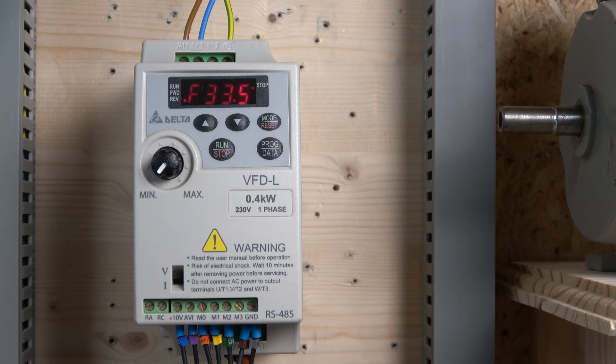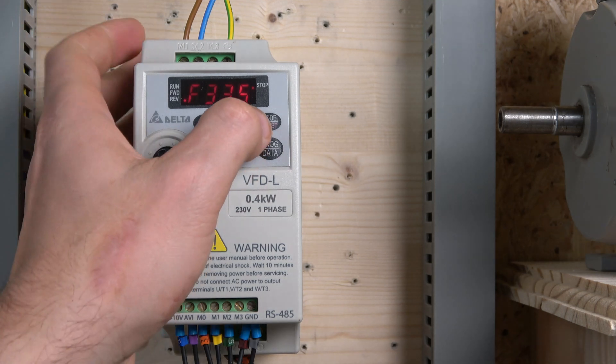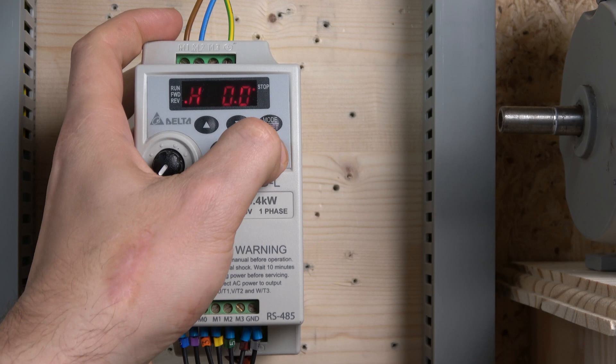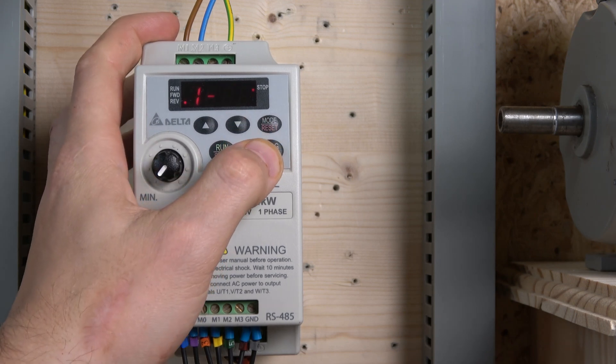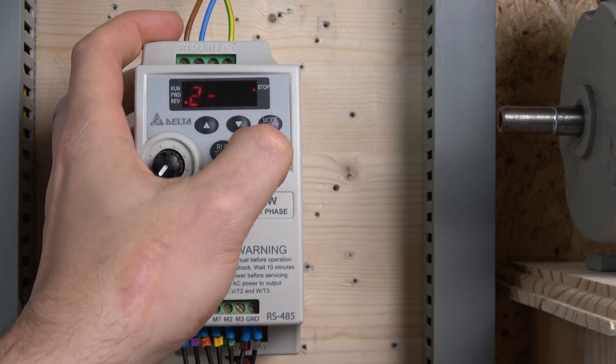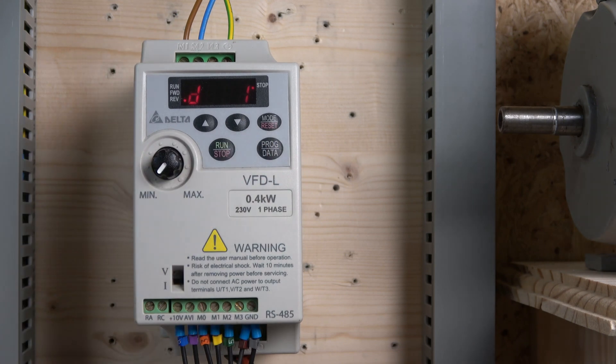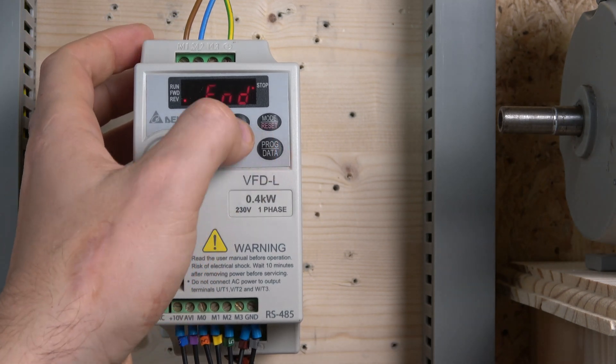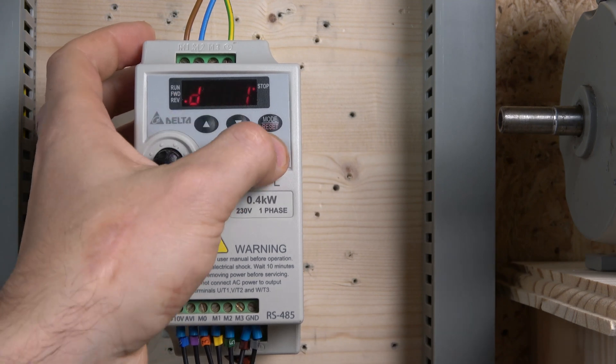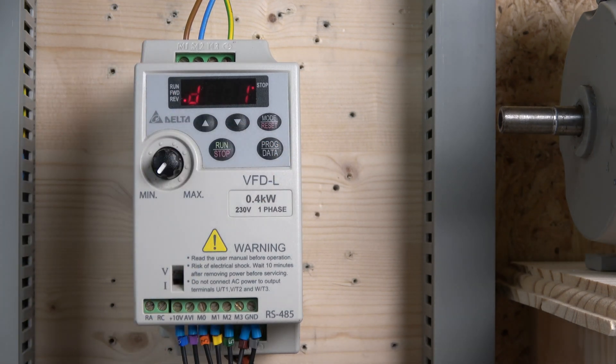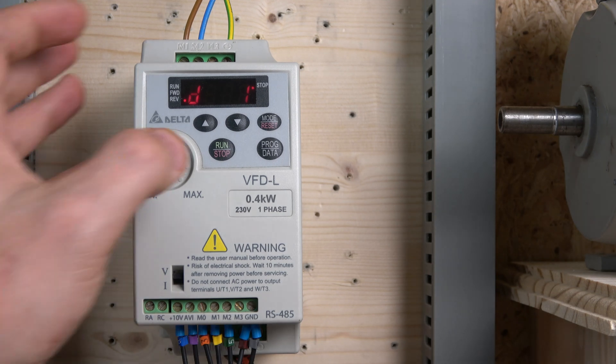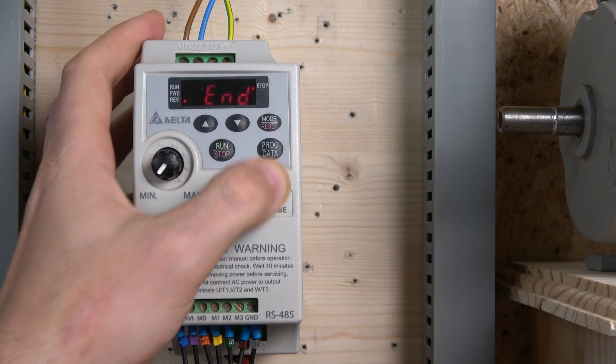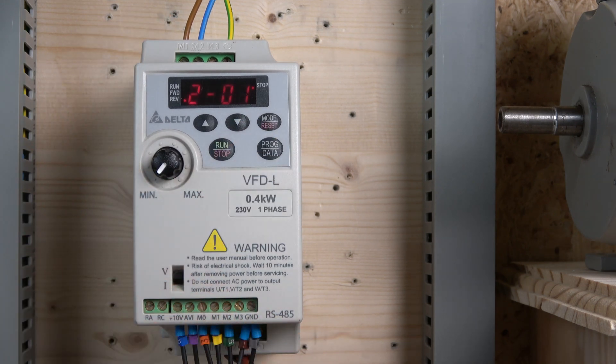For the parameters, the first parameter we're going to change is our source for the frequency command. That's going to be zero to ten volts which is set to one. And obviously the source for operation commands, that's going to be one as well for the terminals. So that's the first thing to do. Basically everything is going to be reading from the terminals.